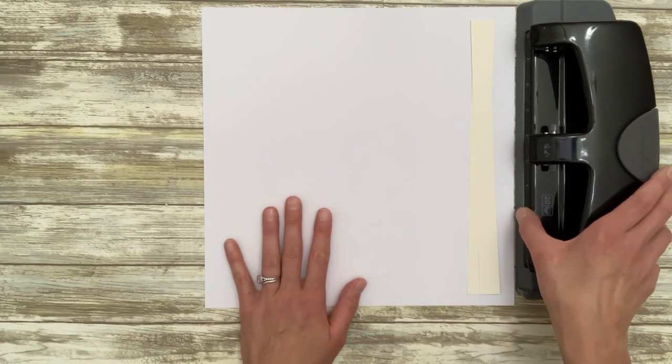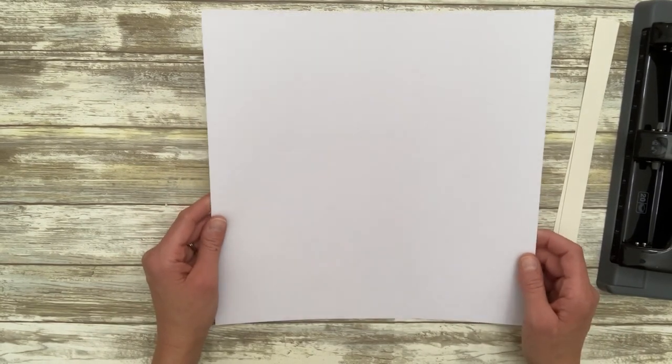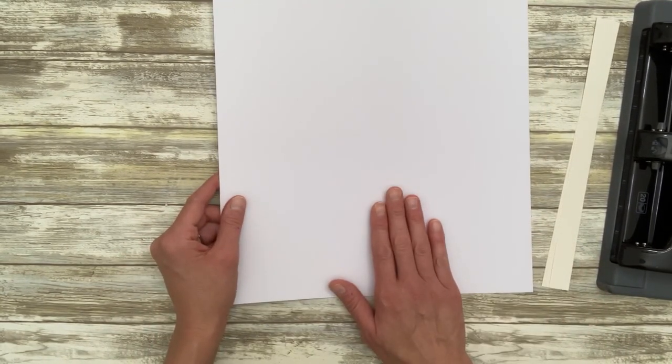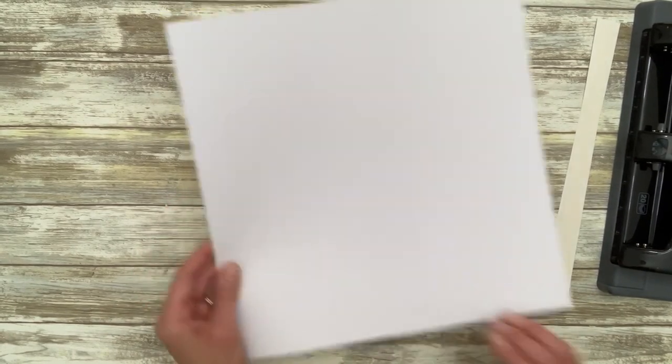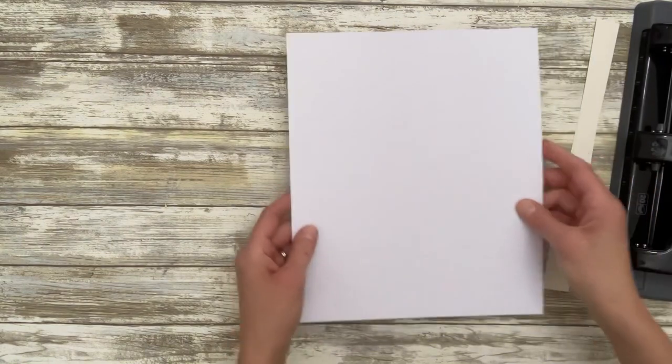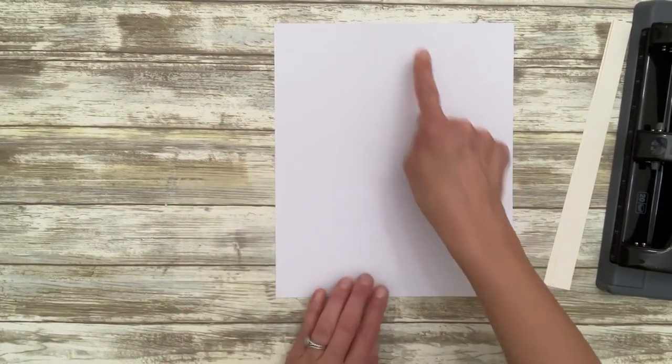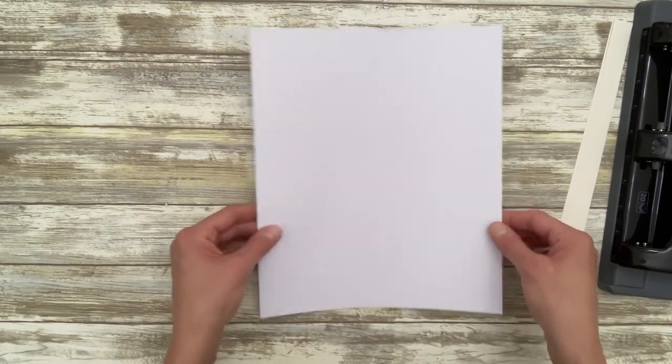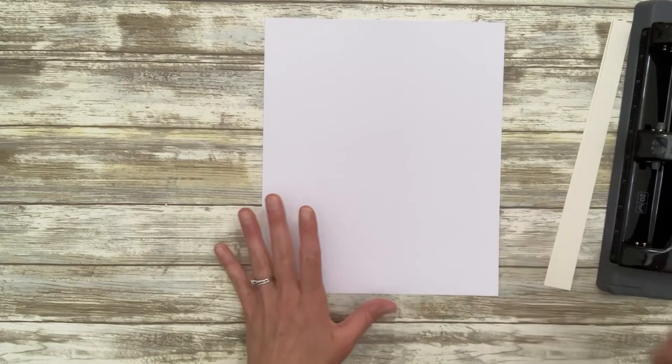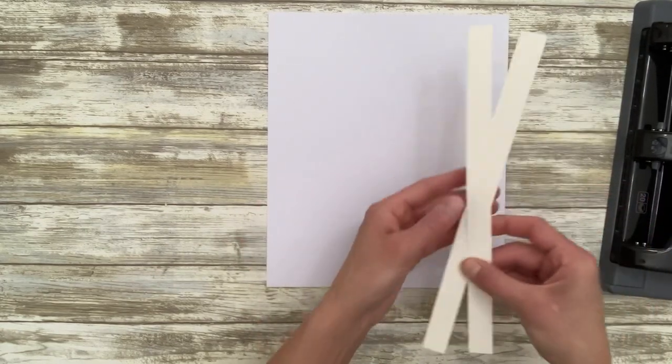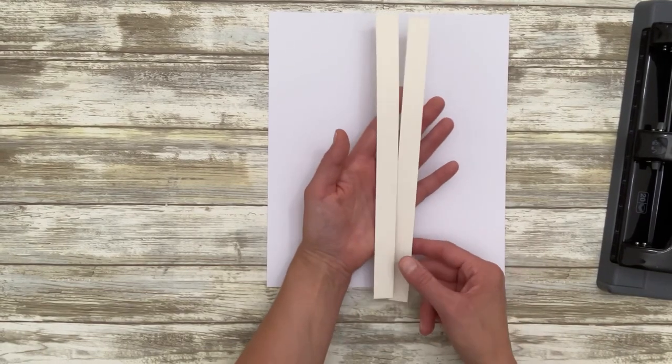Our pages are going to be eight and a half by eleven, but we are going to cut them to nine and one quarter by eleven. So we have one page that is nine and one quarter by eleven. This is our 110 pound cardstock and I always use white. You certainly can use any color you want.